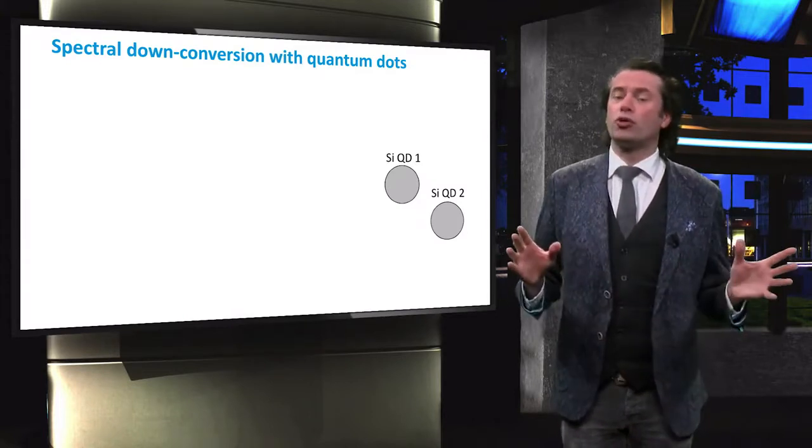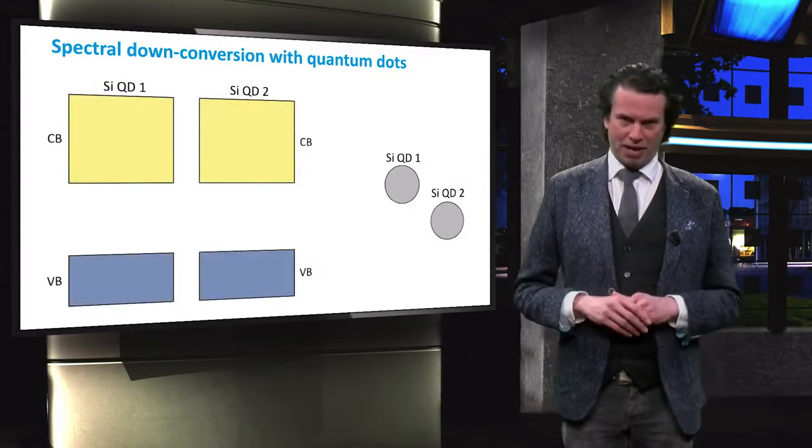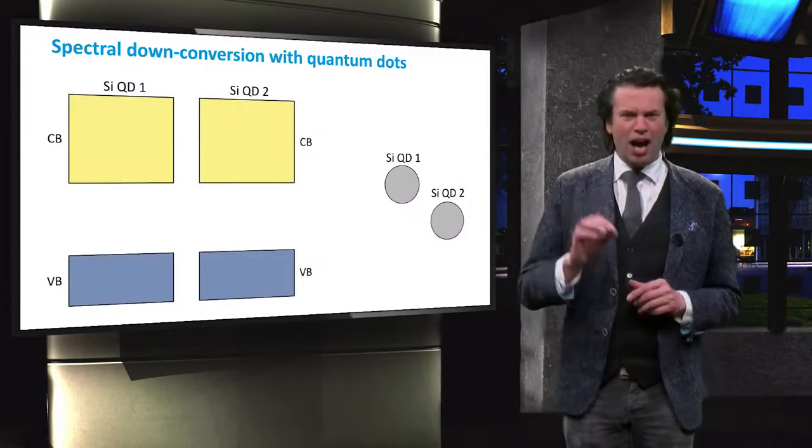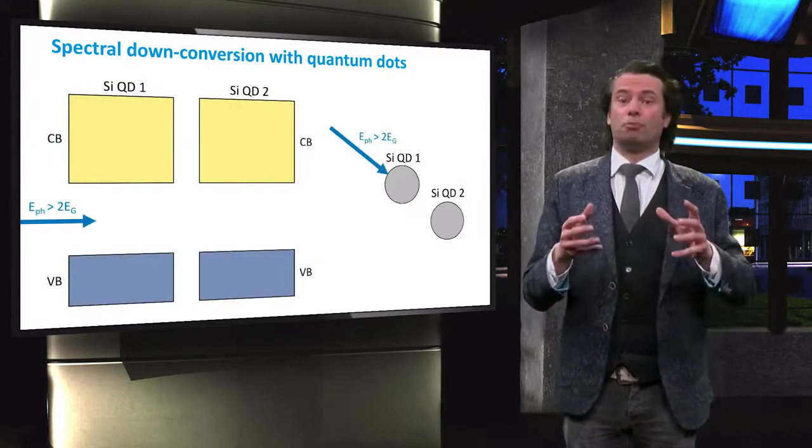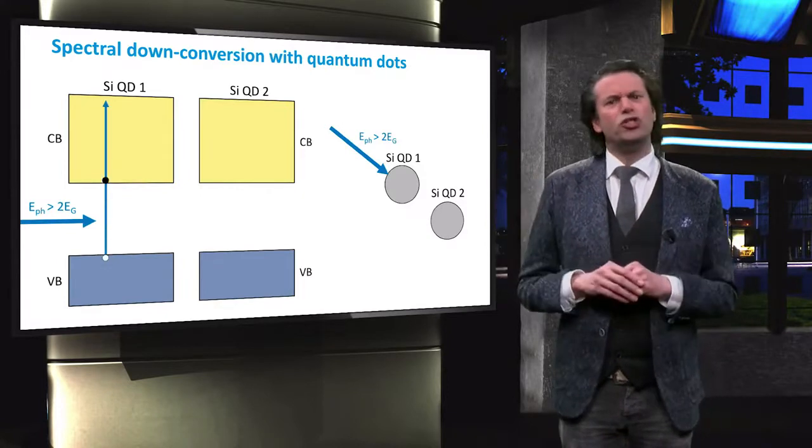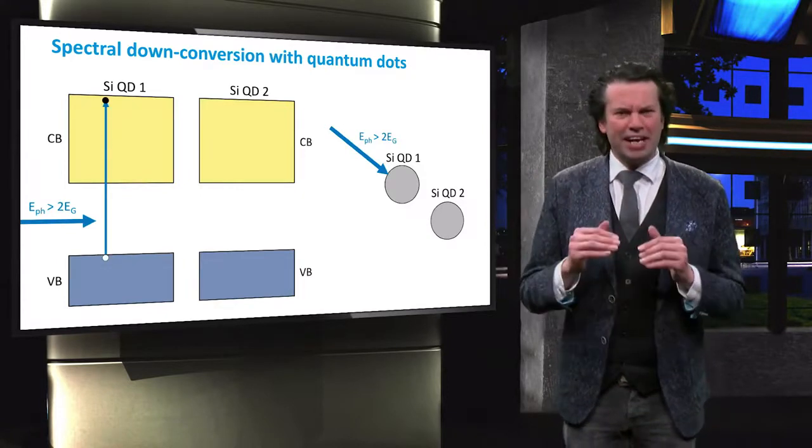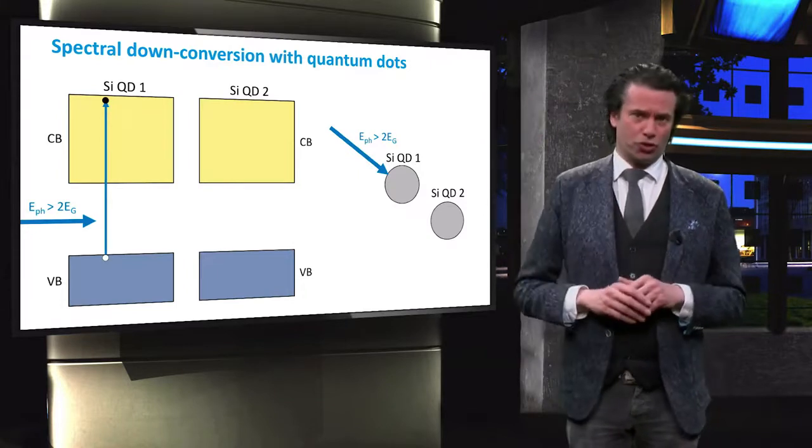The figure shows two silicon quantum dots and their respective band diagrams. Now a high energy photon is absorbed by quantum dot 1, resulting in an electron being excited high into the conduction band.